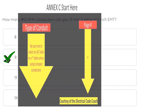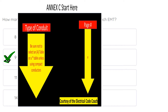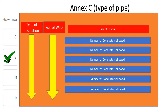We start this process at the beginning of Annex C, which lists our types of conduits and their page numbers. Be sure not to select an A table or a star table unless using compact conductors. When we find our page number, we head over to Annex C and always read the top of the table to confirm we're not in an A version and that we're in the correct type of pipe. Every time we flip a page, we go back to the top to make sure we haven't drifted into another pipe type, because all these tables look identical. When we verify the right table, we start on the left-hand side to find our insulation type, confirm our wire size is listed, then find our size of conduit, come down, and find the number of conductors allowed.